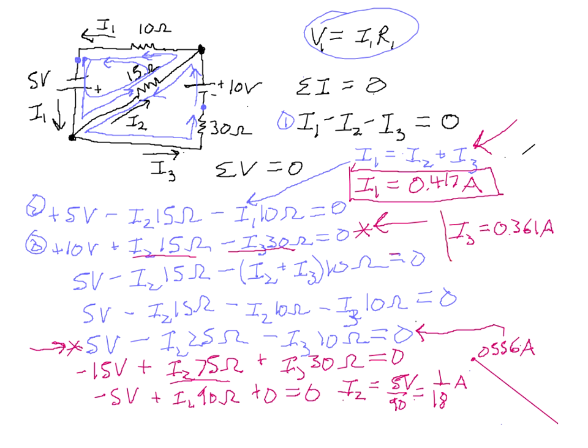Now it just so happens that all of our current value answers came out positive. Since they all came out positive, that tells us that the original guesses that I made about the directions of the current, here, here, and here, those directions were all correct. If at some point you guess wrong about the direction of the current, then you'll end up with a negative answer when you do the math. And that just tells you that the way you guessed was opposite to the actual direction.